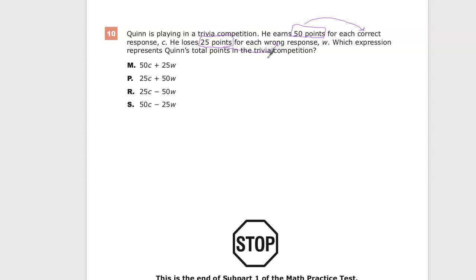For instance, if Quinn gets 12 questions correct, we'd multiply 12 times 50, or add 50 twelve times, which is crazy town, to find out how many points that he's earned.